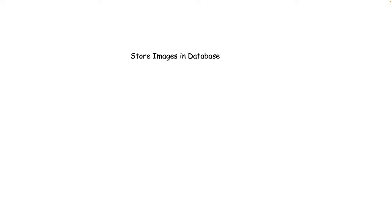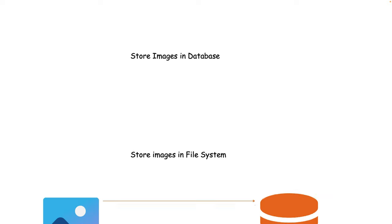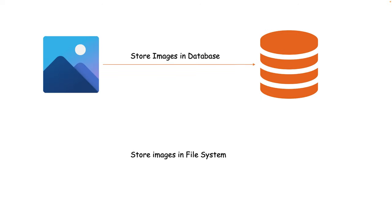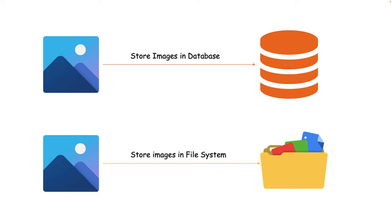There are multiple ways to store images. In approach one, you can directly store the image as a binary file to the database — while storing you can compress it, and while retrieving you can decompress it for more security. In approach two, you simply store the image to the file system and just store the path of that image or file to the database, which is quite simple.